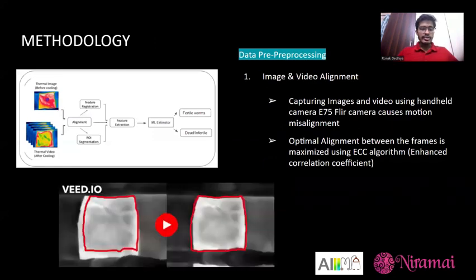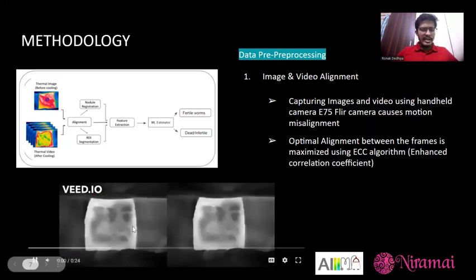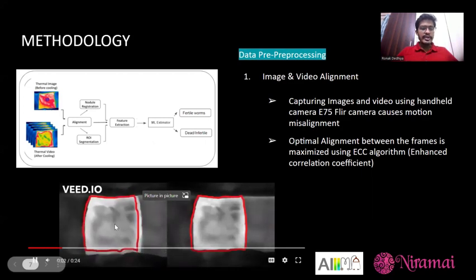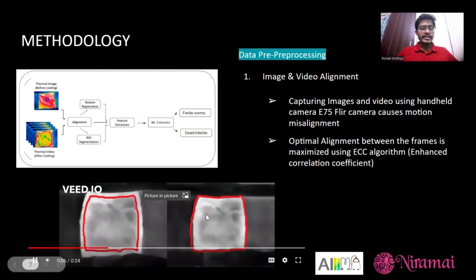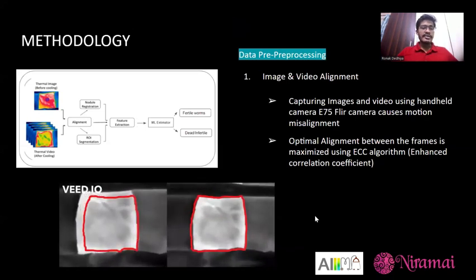The second step is the methodology. We obtained thermal data images and videos and passed them through a data pre-processing step involving three stages, followed by feature extraction. After feature extraction, an ML estimator is used to distinguish between a fertile worm and a dead or non-fertile worm. The first pre-processing step is image and video alignment. Since all images and videos were captured using a FLIR E75 camera, there is motion misalignment between frames. Optical alignment is performed using the ECC algorithm — Enhanced Correlation Coefficient — to stabilize them. As shown in the video, the left side is the unstabilized original and the right is the stabilized version.